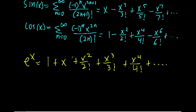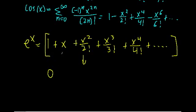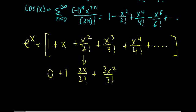Here's what we're going to do: let's take the derivative of both sides. We'll take the derivative of this enormous polynomial term by term. The derivative of 1 is just 0. Derivative of x is just 1. Derivative of x squared is 2x over 2 factorial. Plus the derivative of x cubed is 3x squared over 3 factorial. Plus 4x cubed over 4 factorial, and so on.